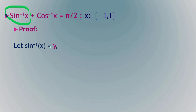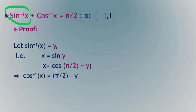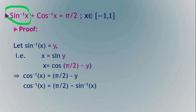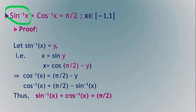From sin⁻¹(x) = y, we get sin(y) = x. Since sin can be written in terms of cos, x = cos(π/2 − y). Taking cos inverse of both sides gives cos⁻¹(x) = π/2 − y. Replacing y with sin⁻¹(x) and rearranging, we get sin⁻¹(x) + cos⁻¹(x) = π/2. The other identities can be proved in the same way.